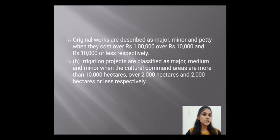The irrigation project is also classified in three types: major, medium, and minor. When the cultural command area is more than 10,000 hectares, it is a major work. When the cultural command area is more than 2,000 hectares, it is a medium work. And when the cultural command area is less than 2,000 hectares, it is a minor work.